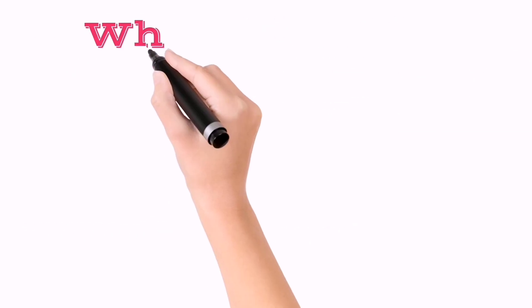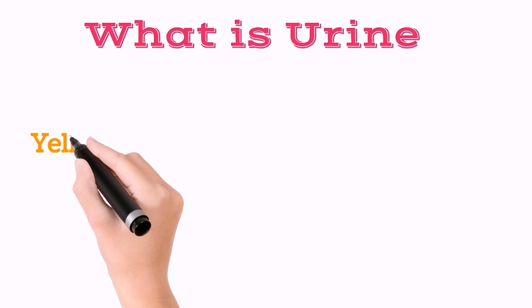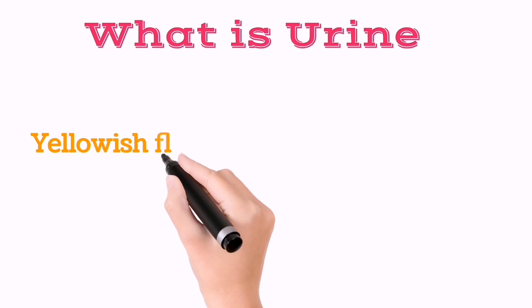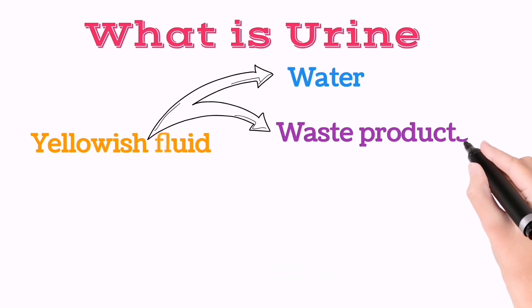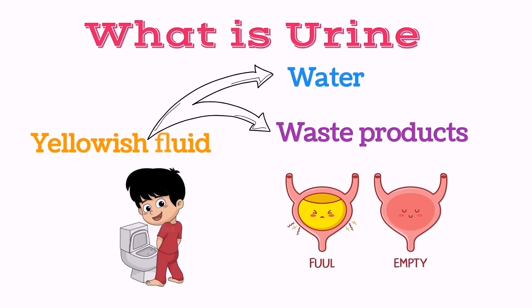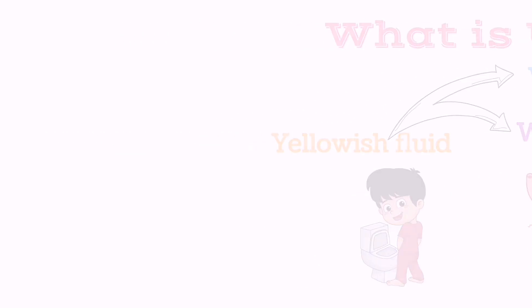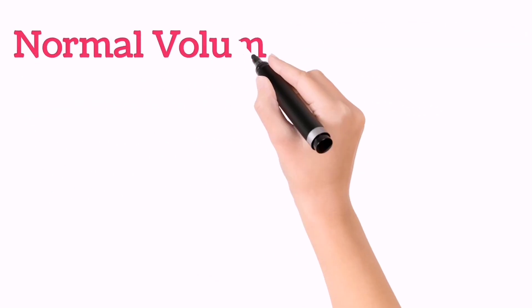First we will know about what is urine. Urine is a yellow fluid that contains water and waste products. Urine is stored in the bladder for some time and then urinated through the urethra.